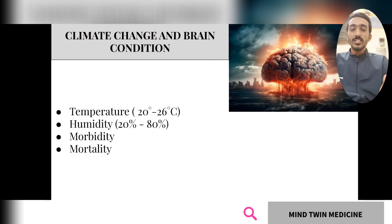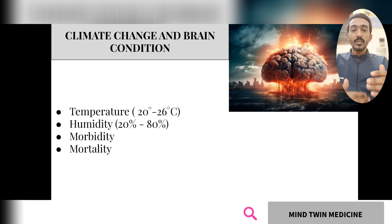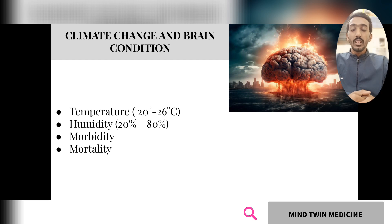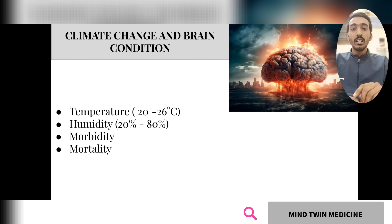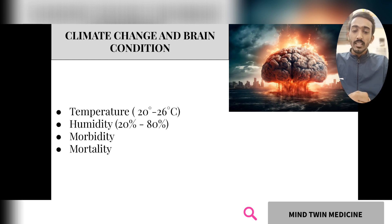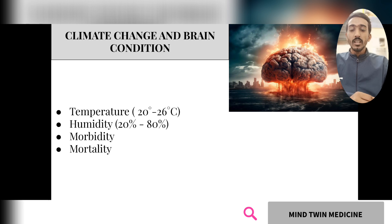The next topic is climate change and brain conditions. You might wonder what climate has to do with the brain — quite a lot, actually. Changes in temperature and humidity due to climate change affect the brain and are interconnected. When temperature or humidity increases, there is reduced brain functioning and increased chances of stroke, migraines, and Alzheimer's disease, impacting neural sensitivity since neurons operate within specific temperature ranges.